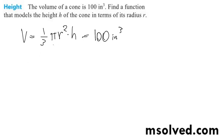So we divide by one-third, and we get pi r squared times h equals 300.